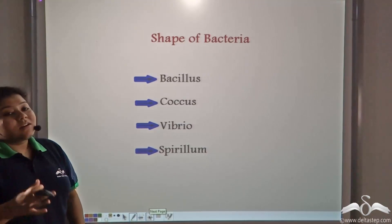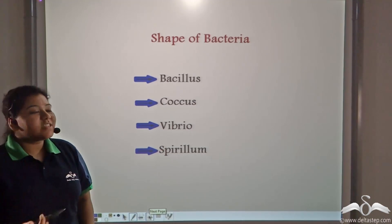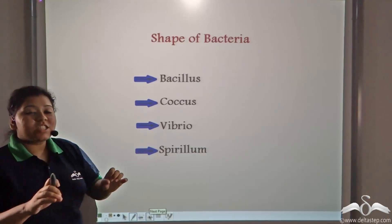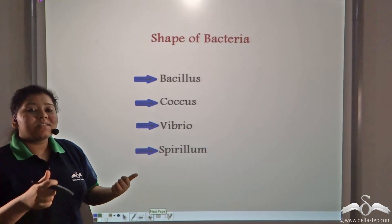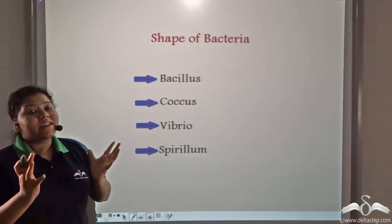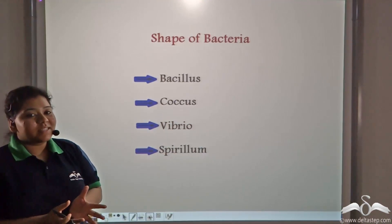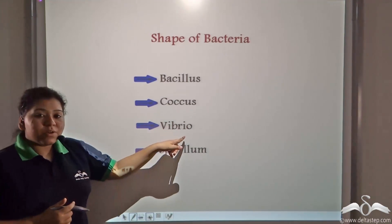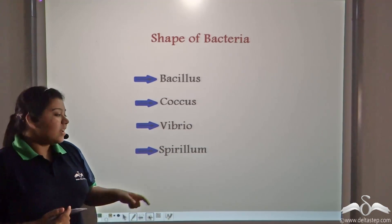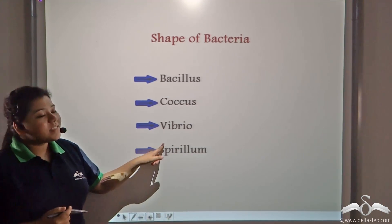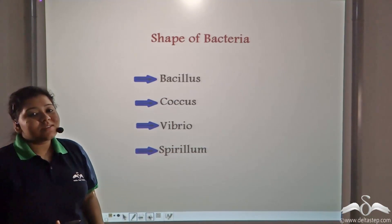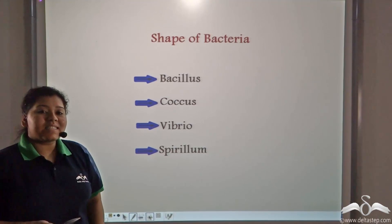To summarize, bacteria can have different shapes: Bacillus, the rod-shaped bacteria that causes tuberculosis; Coccus, the spherical-shaped bacteria; Vibrio, the comma-shaped bacteria that causes Cholera; and finally Spirillum, the spiral-shaped bacteria that causes the sexually transmitted disease syphilis.